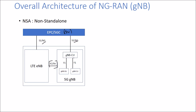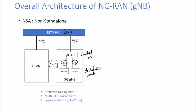Inside our 5G GNodeB, we have a GNodeB CU — the Central Unit — connected to our GNodeB DU, the Distributed Unit, using the F1 interface. Non-standalone is a preferred deployment mode, as most operators worldwide are deploying it because they have an existing legacy 4G network. It provides a multi-RAT environment — at least 4G plus 5G — where you leverage existing RAN and core components in the NSA network.